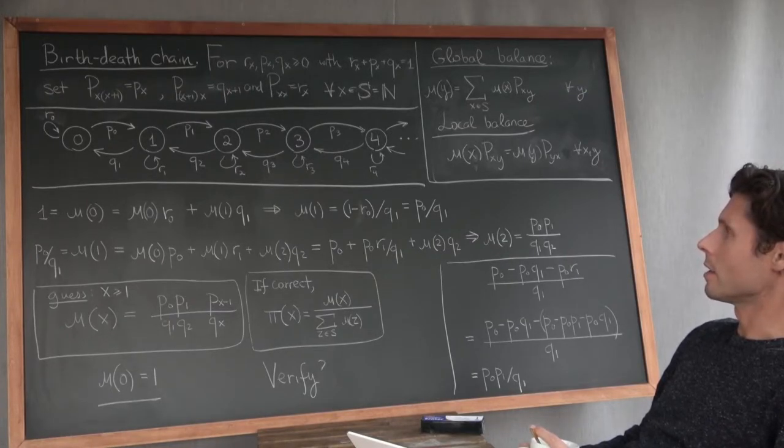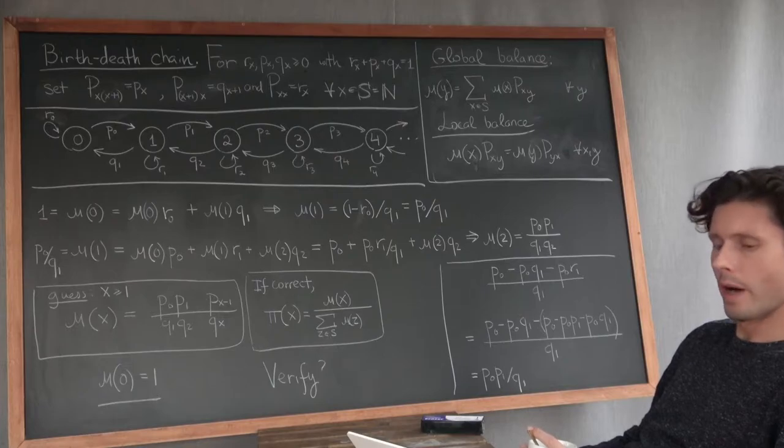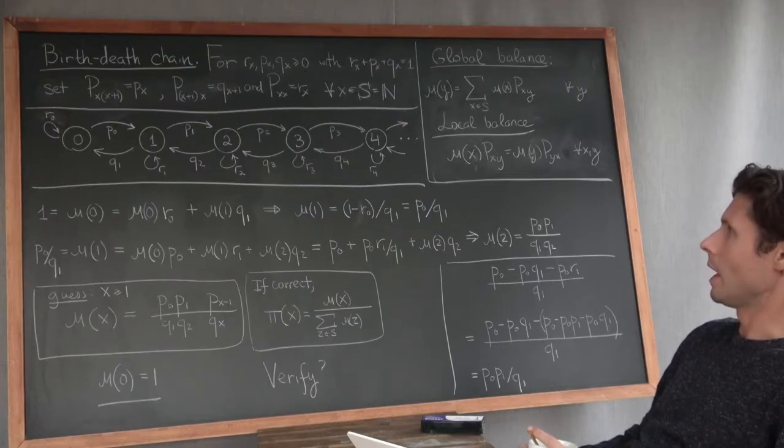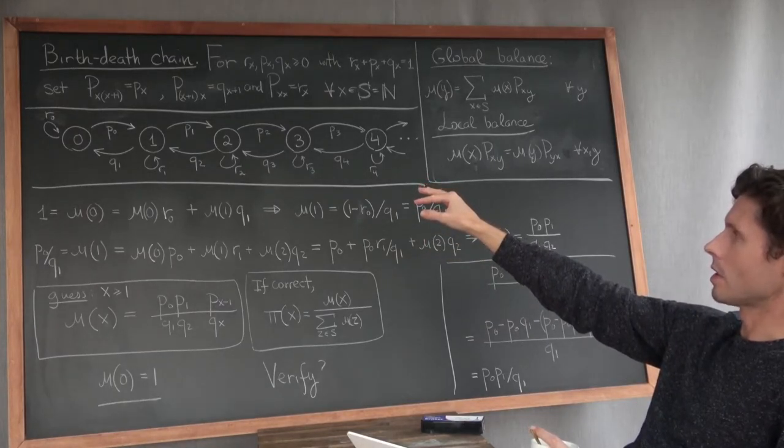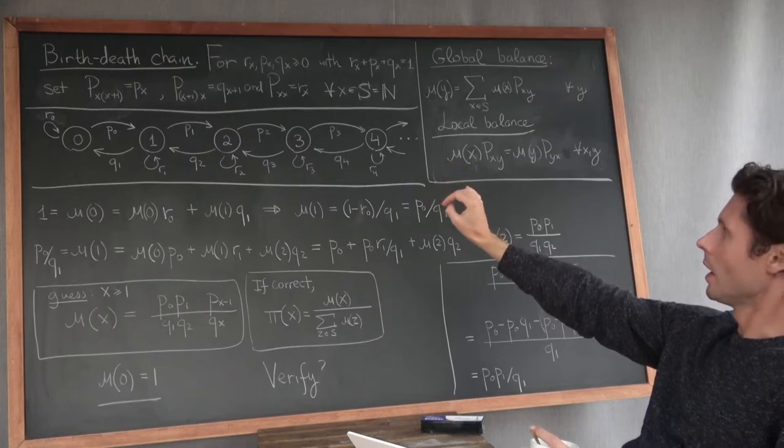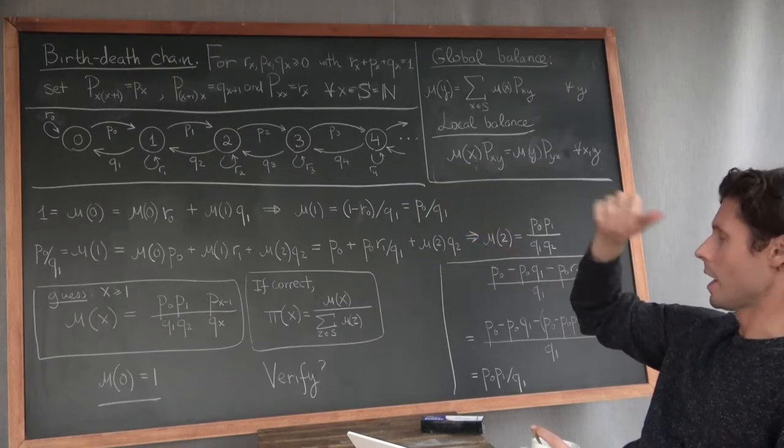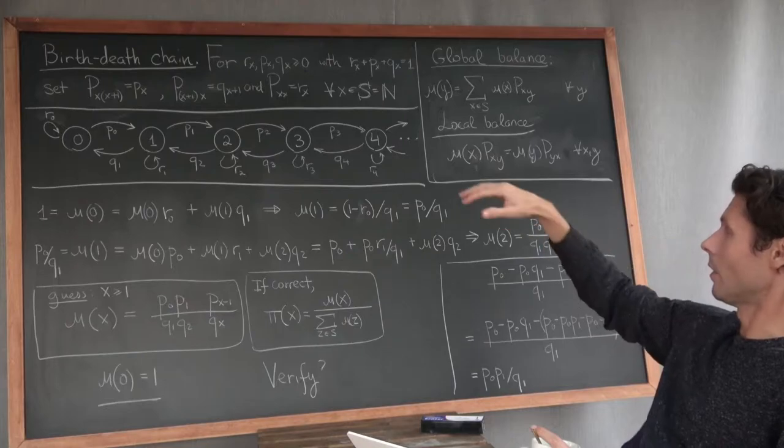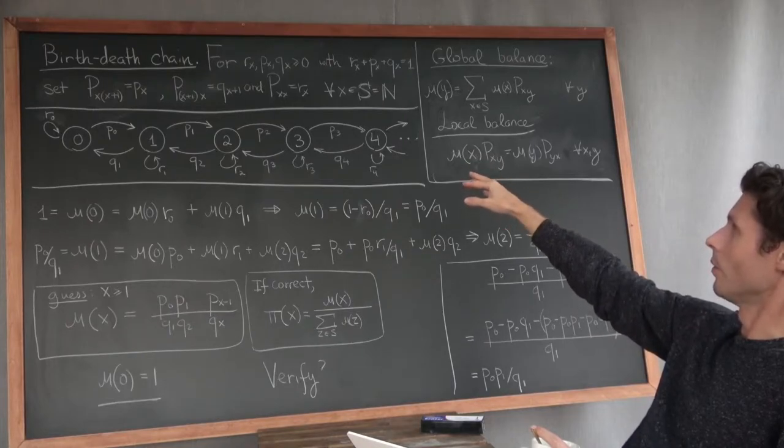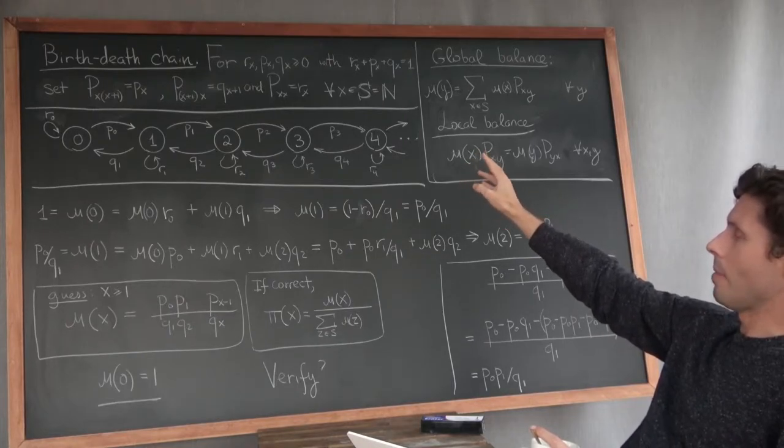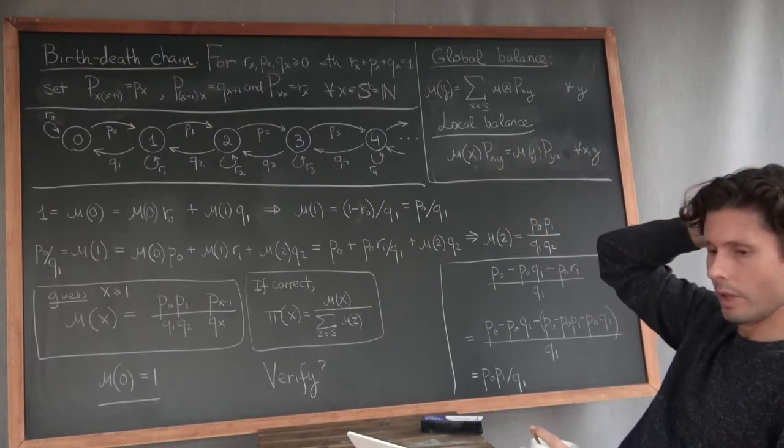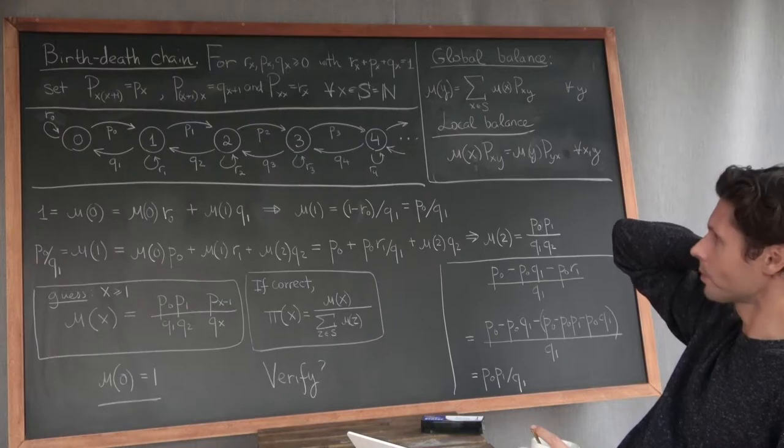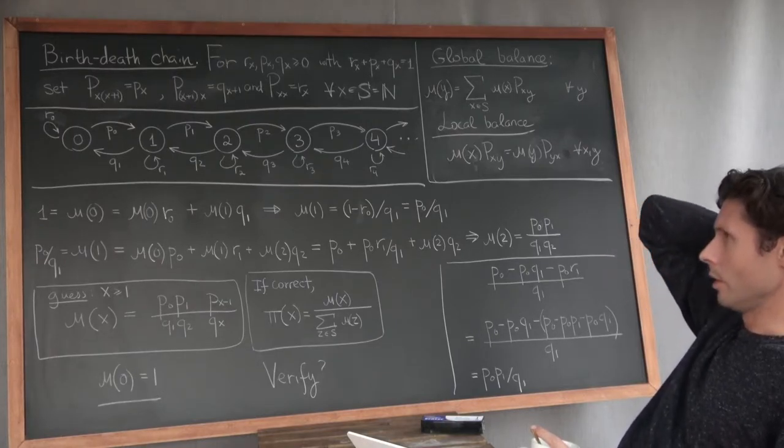This also generalizes the example 4.35 in Ross. There he has essentially this same model with a slightly different notation. I think he uses alpha instead of P. But in his case, it's a finite state Markov chain. For him, there are M finite states. Here, this is a more general thing. You have an infinite state space.